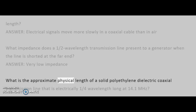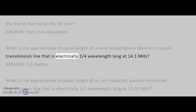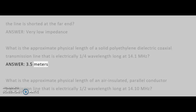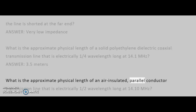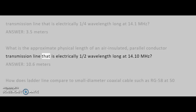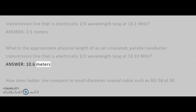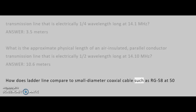What is the approximate physical length of a solid polyethylene dielectric coaxial transmission line that is electrically one-quarter wavelength long at 14.1 MHz? Answer: 3.5 meters. What is the approximate physical length of an air-insulated parallel conductor transmission line that is electrically one-half wavelength long at 14.10 MHz? Answer: 10.6 meters.